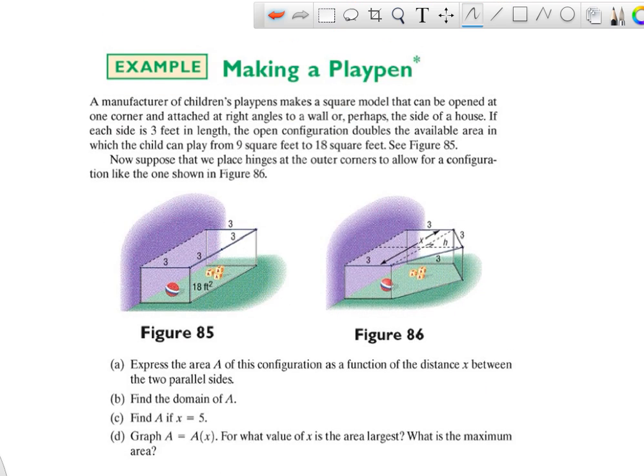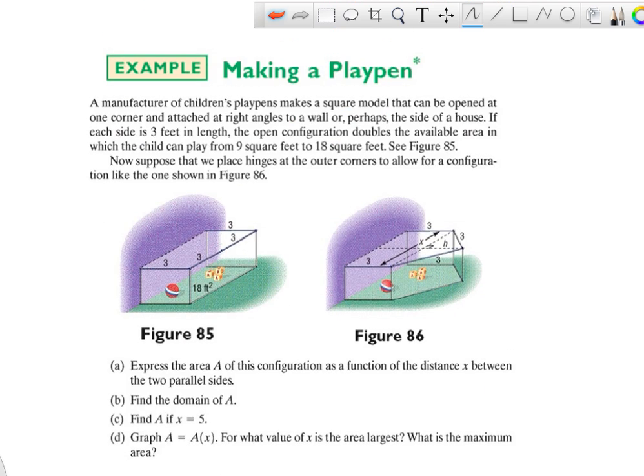All right, last example. The manufacturer of a children's playpen makes a square model. It can be opened at one corner and attached at right angles to a wall or perhaps the side of a house. So if we have 3 feet in length, the open configuration. So open means that we use a wall here. And then we do 3 and 3 and 3 and 3. So we get an area of 18 feet squared.